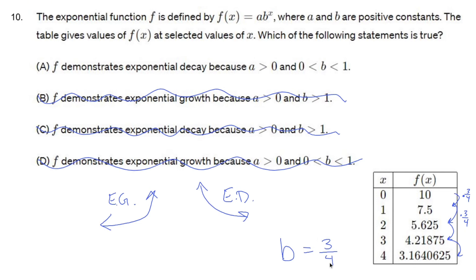B is true because my B is three quarters. And by definition, exponential decay has a B in between zero and one, not including any of them. So A is going to be my guy.